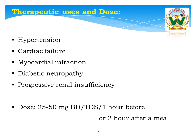Next, therapeutic uses and dose. Hypertension is the most common use. These drugs are also used in cardiac failure, myocardial infarction, diabetic nephropathy, and progressive renal insufficiency. These are the therapeutic uses of ACE inhibitor drugs. Dose: 25 to 50 mg, twice or thrice a day, one hour before or two hours after a meal.